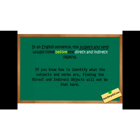In an English sentence, the subject and verb usually come before the direct and indirect object. If you know how to identify the subject and verb, then finding the direct and indirect object will not be that hard. किसी भी English की जुम्ले में subject और verb हमेशा direct और indirect object से पहले आता है। अगर आप अच्छी तरह से subject और verb को ढूंढेंगे तो आपके लिए direct और indirect object ढूंढना मसला नहीं करेगा।